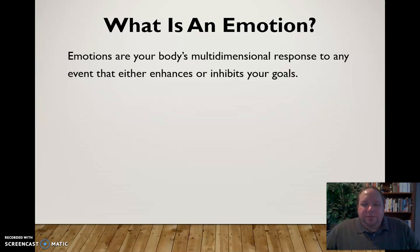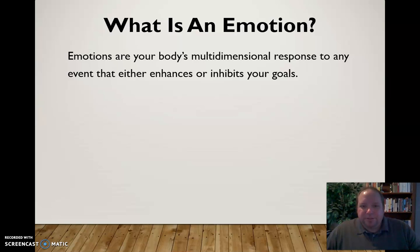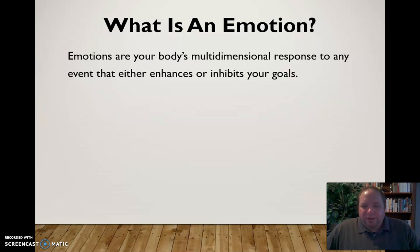To clarify a few things: first, we're going to discuss the idea that emotions are multidimensional — that they have more than one dimension and we have different responses in a variety of ways. Second, emotions are related to an event. They have a trigger event; they're not just something that builds up within us. They have something that precipitates them. And then, emotions can either enhance or inhibit your goals — they'll either help you achieve the goal or keep you from achieving it.